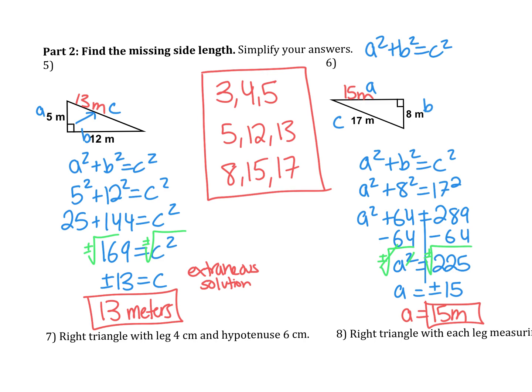You can try the next two on your own. Remember that anything that's a hypotenuse would be labeled C and anything with a leg would be labeled A or B. We'll check these in class tomorrow.